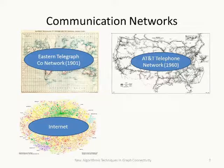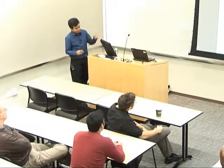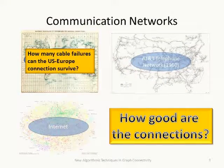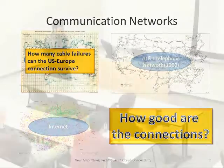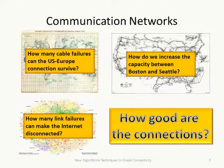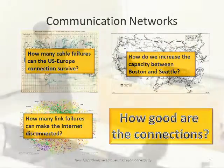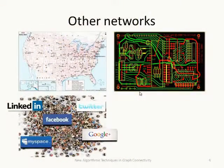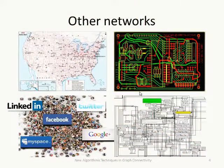What connects all of these networks is the desire to connect individuals, which means the natural questions for any such network are: how good are these connections? How many cable failures can the US-to-Europe connection survive in a telegraphic network? How do we increase the capacity between Boston and Seattle? Or in the internet, how many link failures can cause it to get disconnected? These questions apply not just to communication networks but also to road networks, electrical circuits, and even social networks and process workflows.